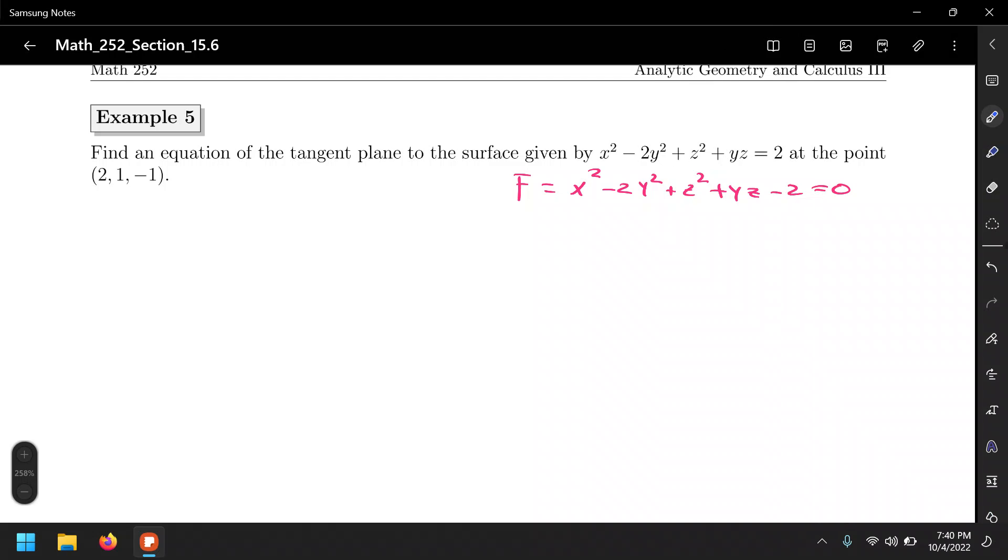And let's find the gradient first, so nabla F, that's the partial derivative of this madness with respect to x. Well, we only have one term that depends on x, and that's the first one, so that's 2x.